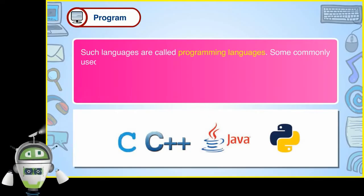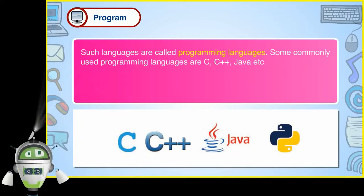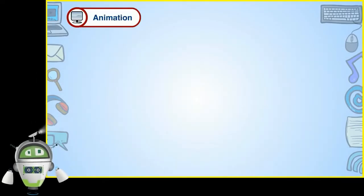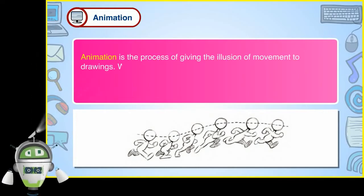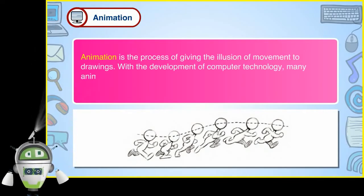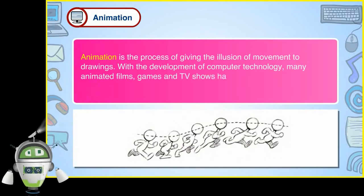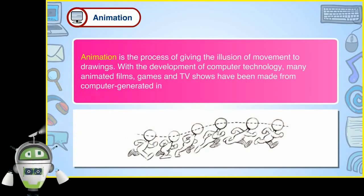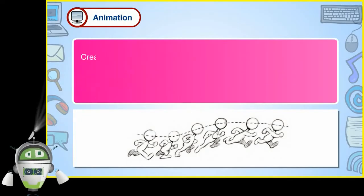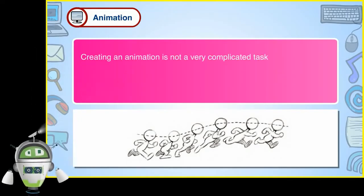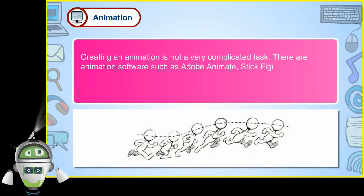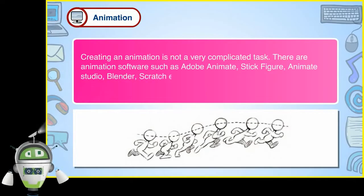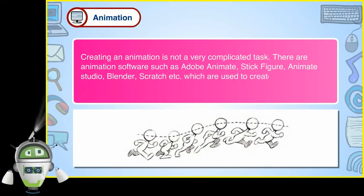Such languages are called programming languages. Some commonly used programming languages are C, C++, Java, etc. Animation is the process of giving the illusion of movement to drawings. With the development of computer technology, many animated films, games and TV shows have been made from computer-generated images. There are animation software such as Adobe Animate, Stick Figure, Animate Studio, Blender, Scratch, etc., which are used to create an animation.